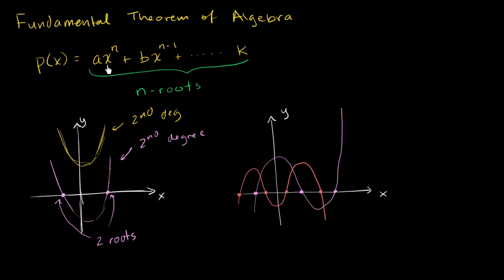This is the key: the fundamental theorem of algebra extends our number system. We're not just talking about real roots — we're talking about complex roots. The fundamental theorem of algebra allows even the coefficients to be complex. In these first examples, the roots were all real, and real numbers are a subset of complex numbers. This yellow parabola, a second degree polynomial, has no real roots — that's why it doesn't intersect the x-axis.